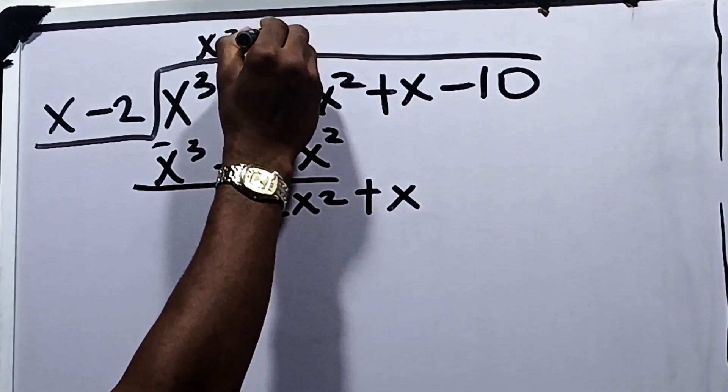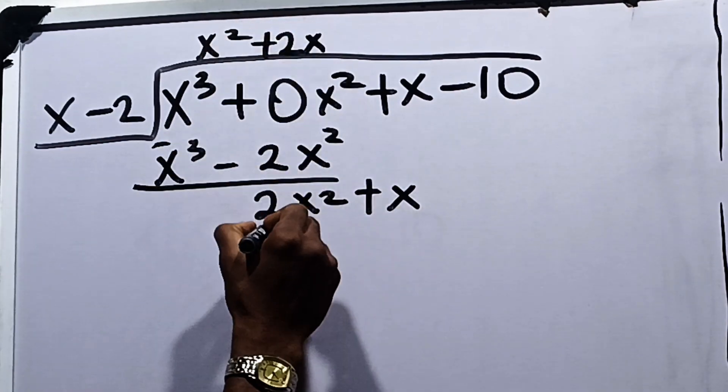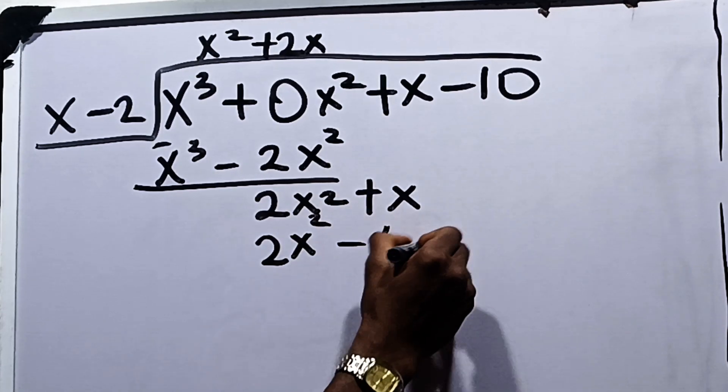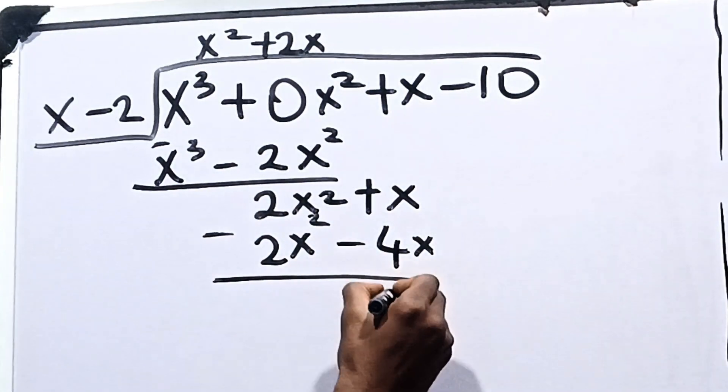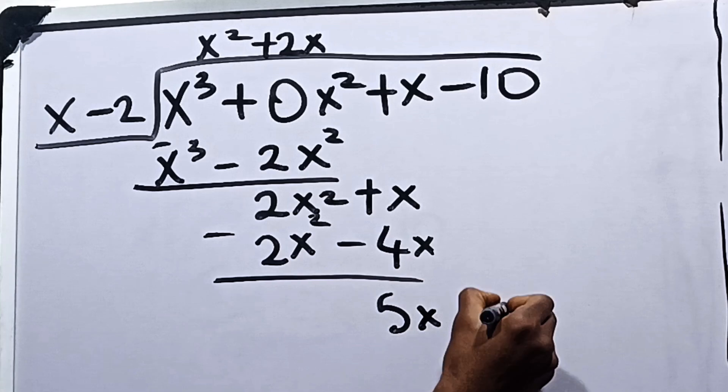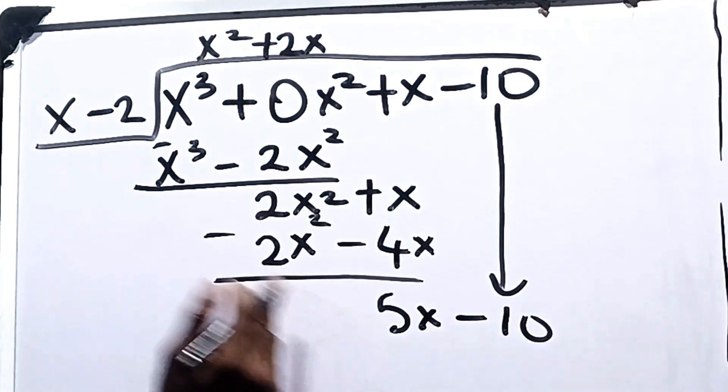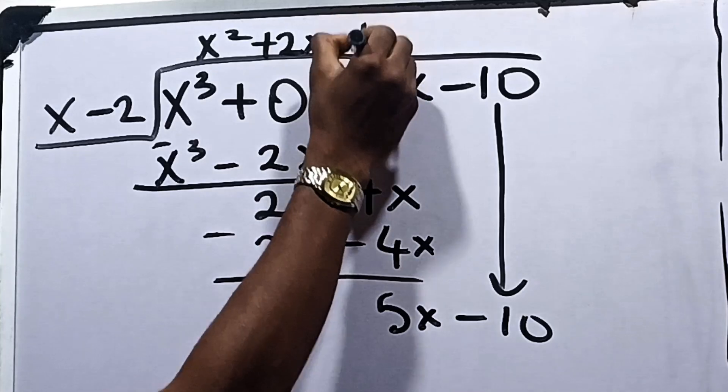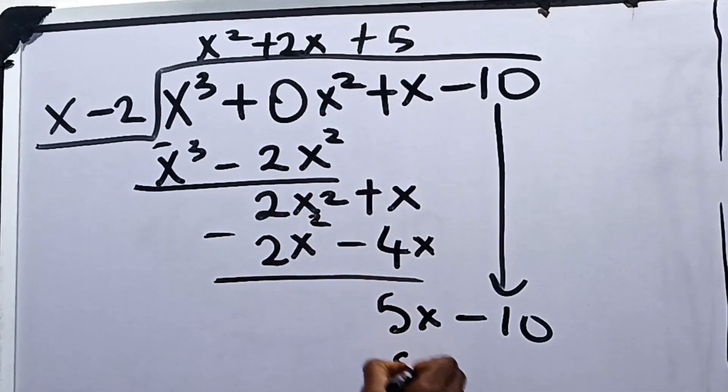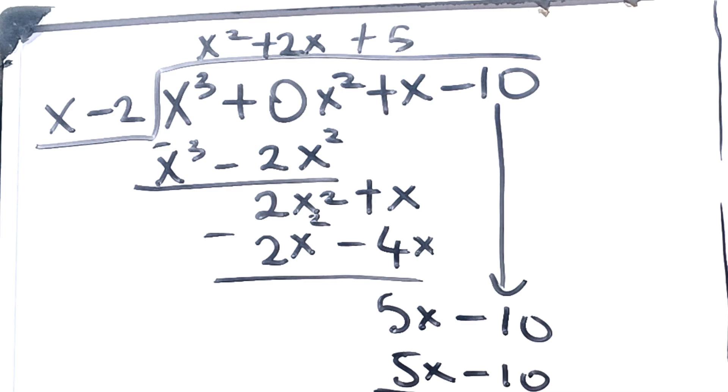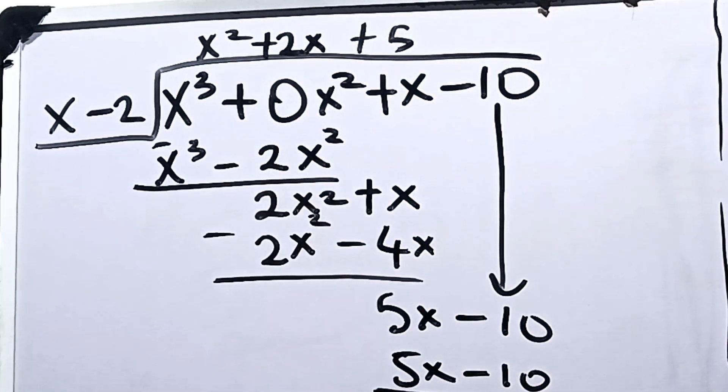This divided by this is plus 2x. This will give us 2x squared minus 4x. When we subtract again, we have 5x minus 10 because we bring down this 10. This divided by this is plus 5. So we have 5x minus 10 and this gives me 0.